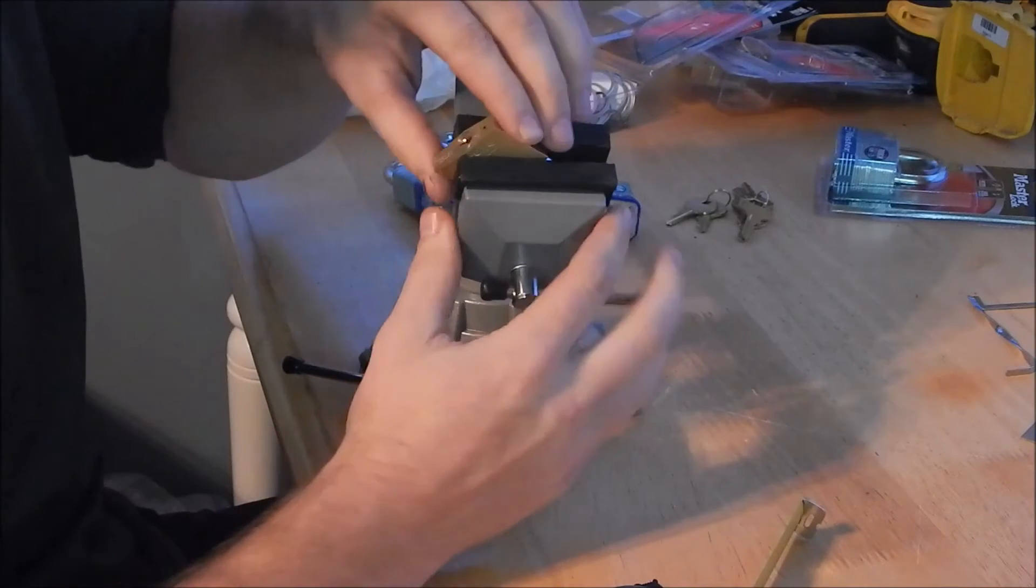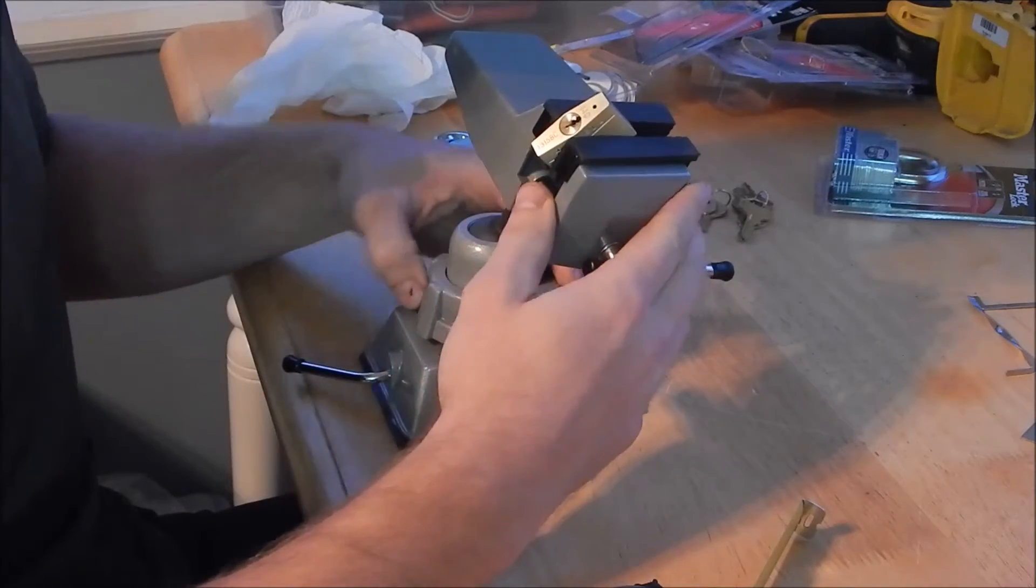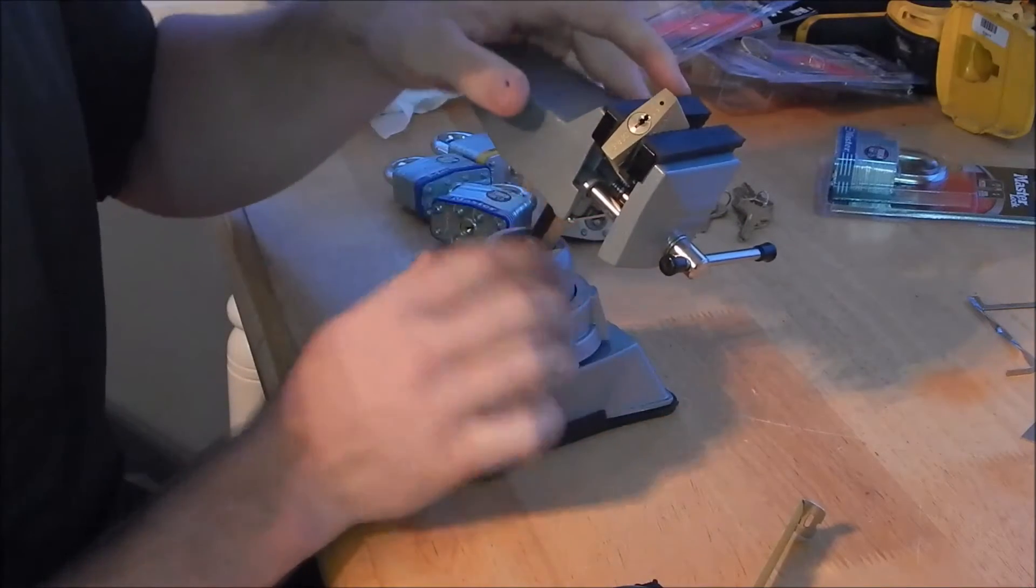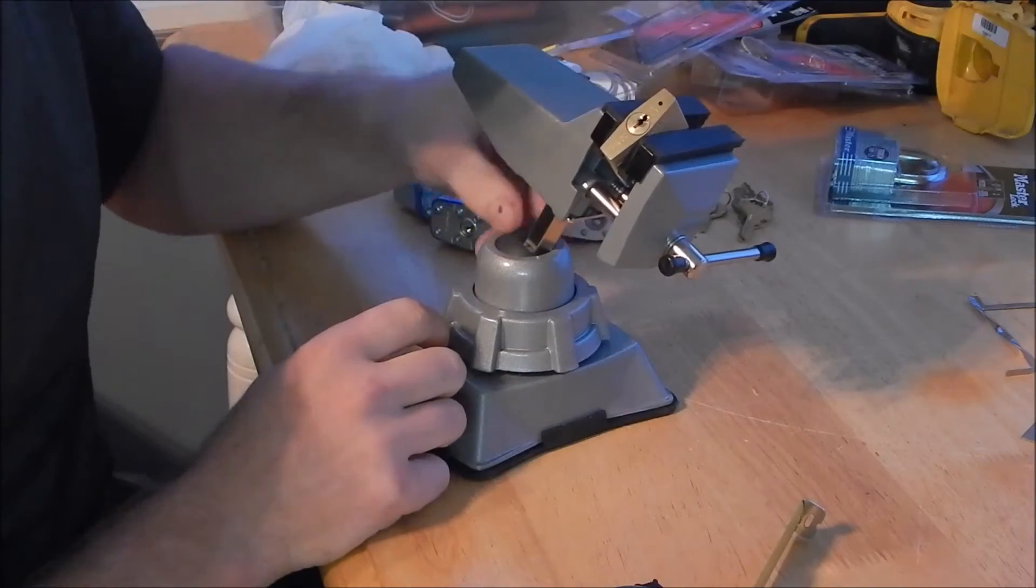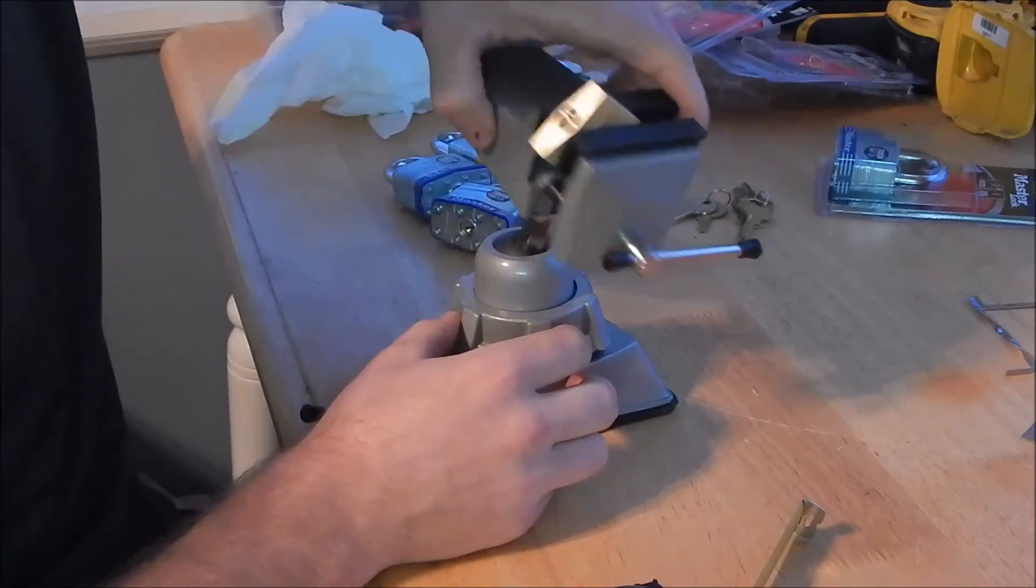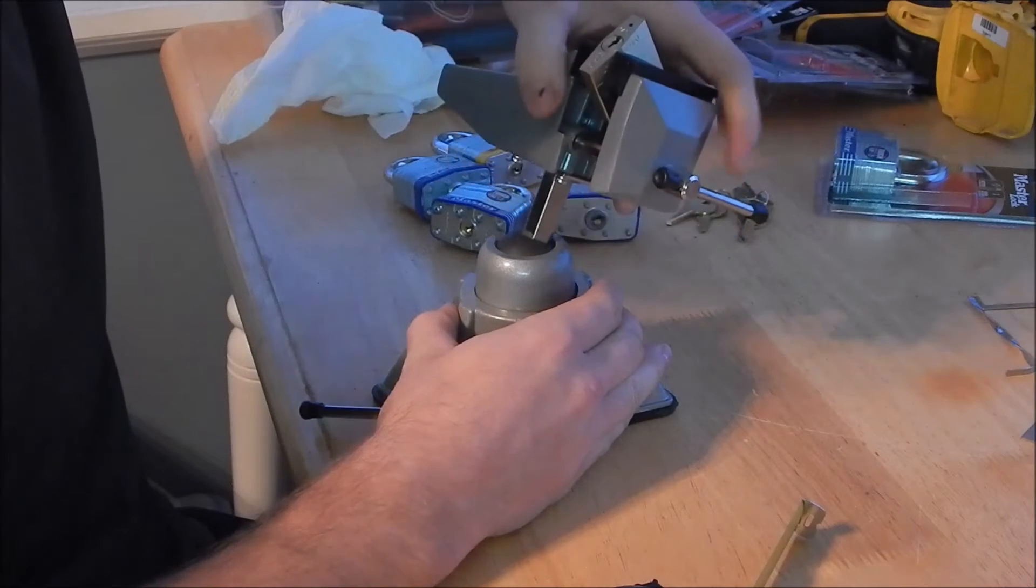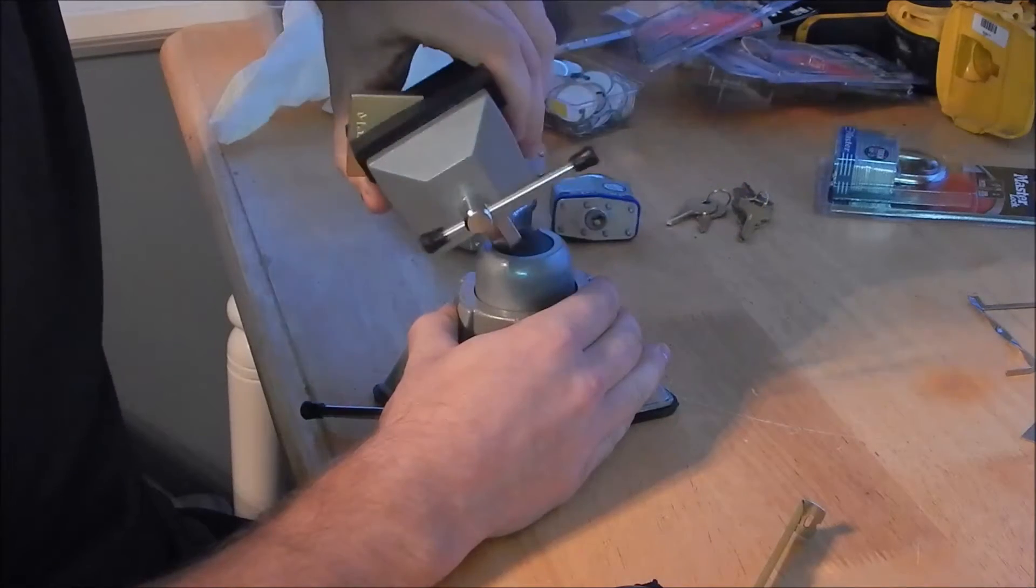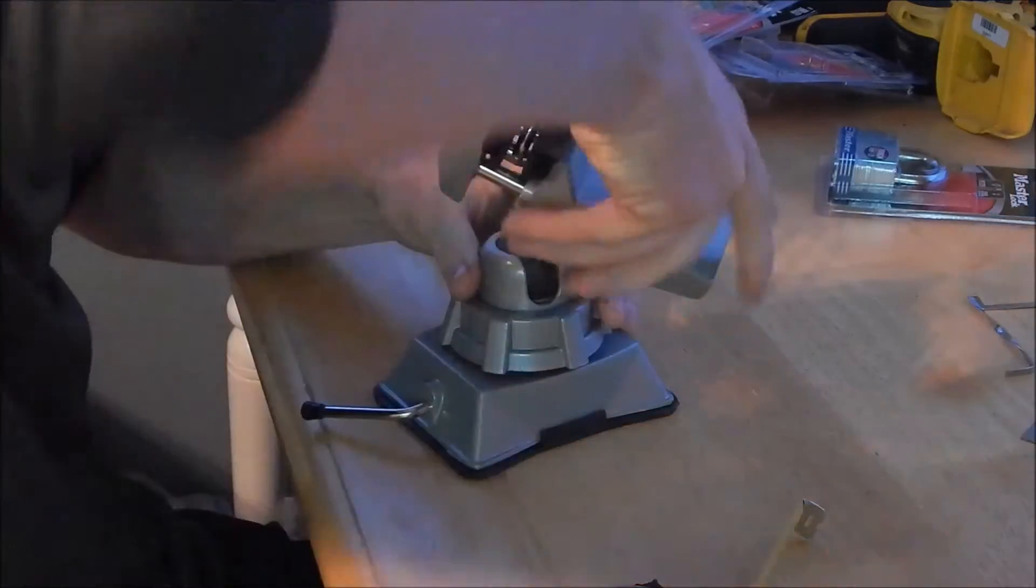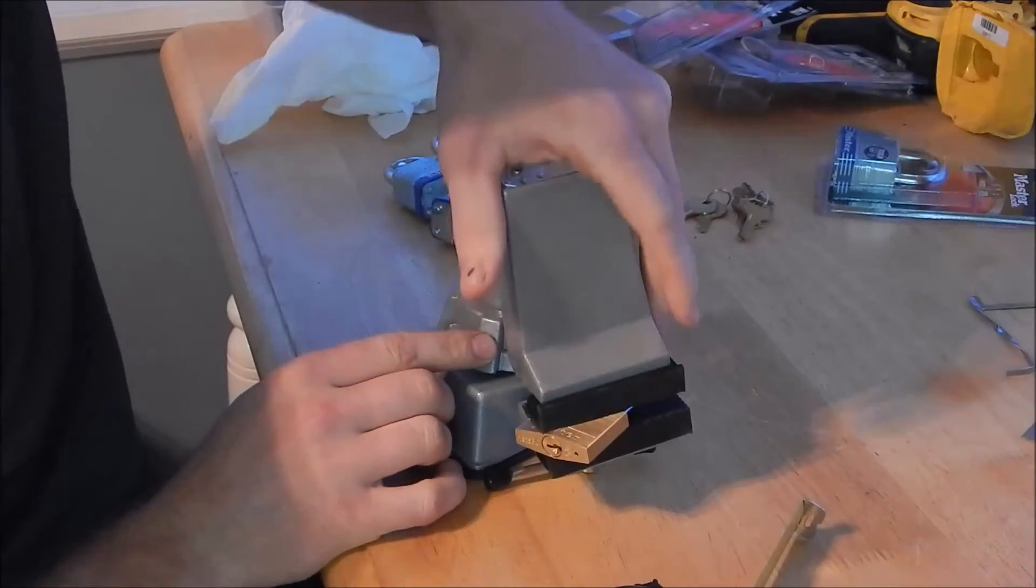Then it has this multi-directional base which pretty much has a ball in here, feels like a steel ball in there. So you loosen that up and then you can spin it 360 this way, you can angle it at whatever angle. And then it has a cutout right here so you can go down towards the ground.